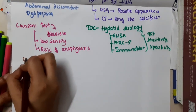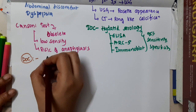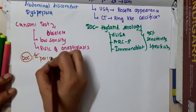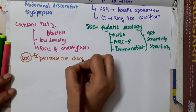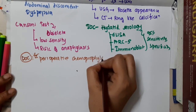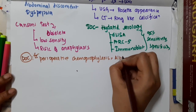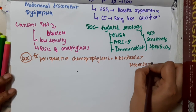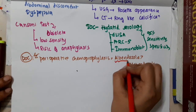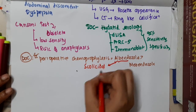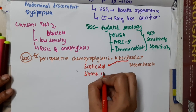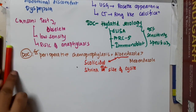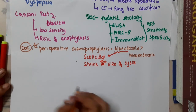The drug of choice for perioperative chemoprophylaxis is albendazole, which is preferred over mebendazole. Albendazole is scolicidal and will shrink the size of the cysts.